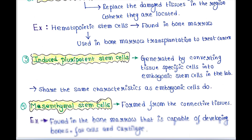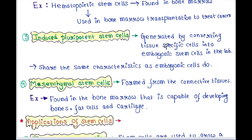Next are induced pluripotent stem cells. These are generated by converting tissue-specific cells into embryonic stem cells in the laboratory. They share the same characteristics as embryonic cells.